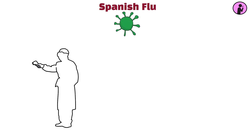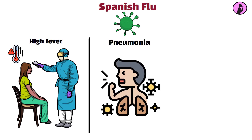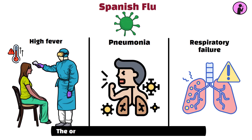The virus primarily affected young adults, causing high fever, pneumonia, and respiratory failure. Despite its name, the origins of the Spanish flu remain uncertain.